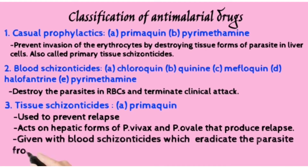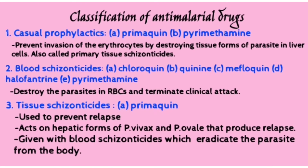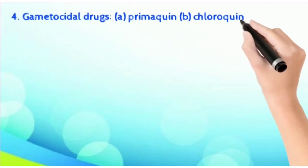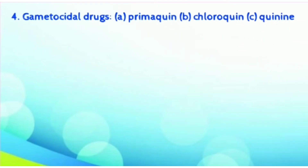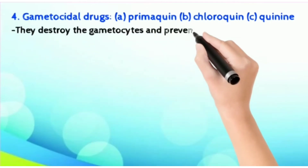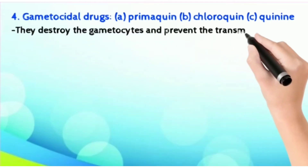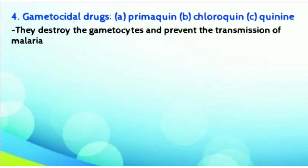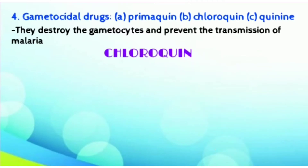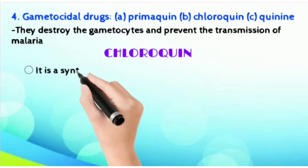Then there are gametocidal drugs. Under this come Primaquine, Chloroquine, and Quinine. These three gametocidal drugs destroy the gametocytes and prevent the transmission of malaria.